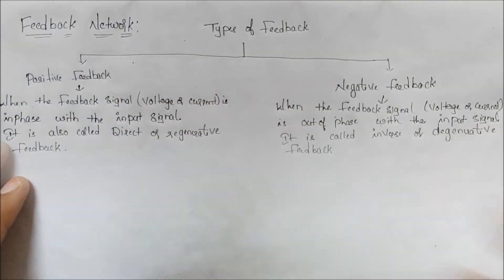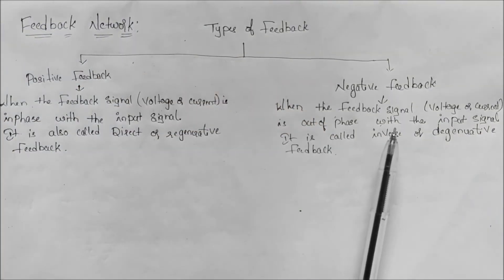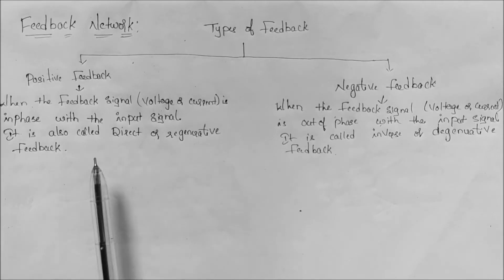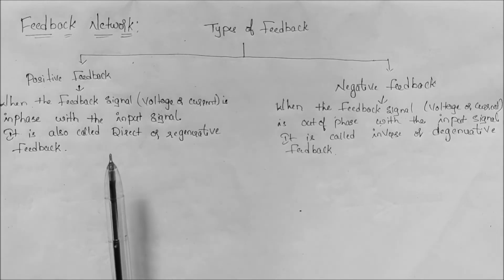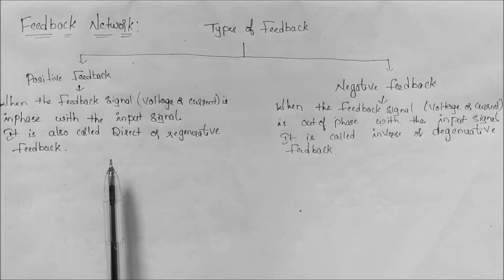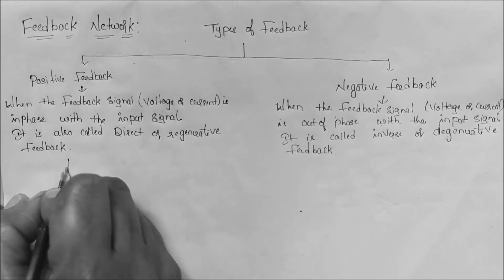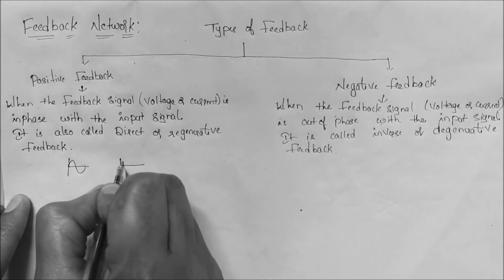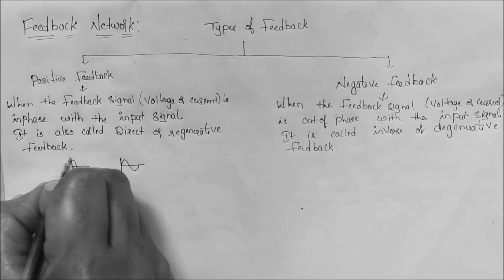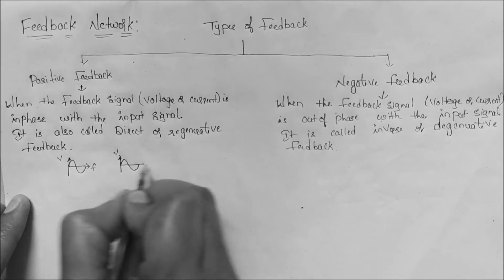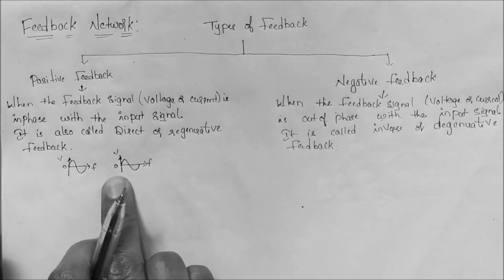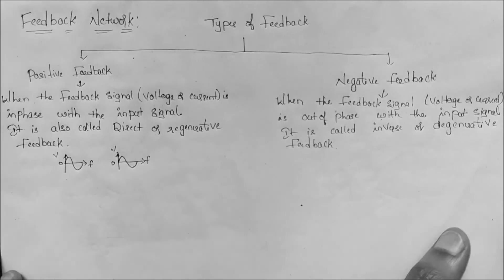There are two types of feedback: positive feedback and negative feedback. Positive feedback is when the feedback signal voltage or current is in phase with the input signal — both signals have the same phase. This is called positive feedback, also known as direct or regenerative feedback.